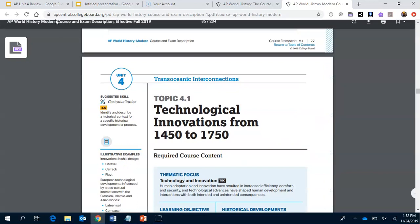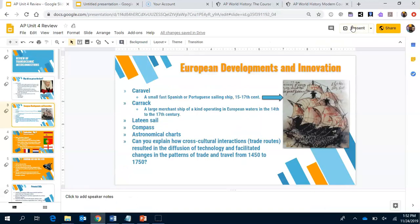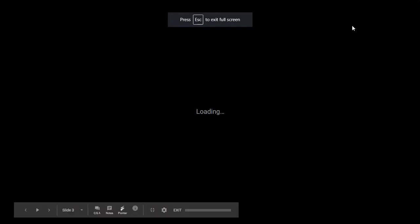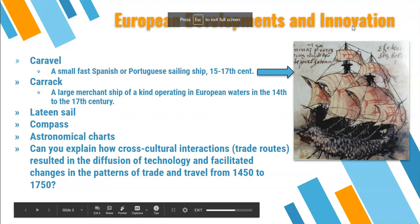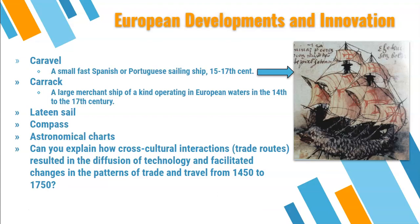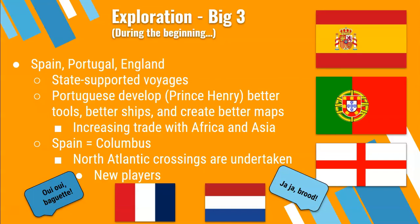Cross-cultural interactions are essentially the trade routes. Talking about diffusion of technology? Sure — the compass, the exploration. The big three during the beginning were the main players: Spain, Portugal, and England. The Portuguese developed better tools, better ships, and created better maps. These states — Spain, Portugal, England — were supporting these voyages and increasing trade with Africa and Asia.